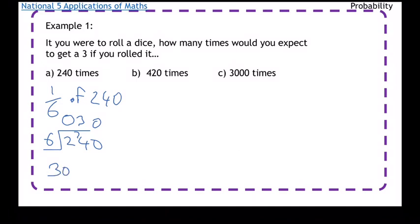And it works the same way for them all. So 420 times we're doing a sixth of that. So we're doing a sixth of 420. So 6 into 42 goes 7 times, so 70 times.